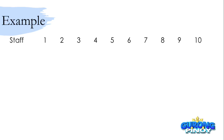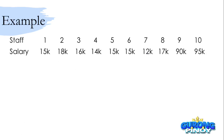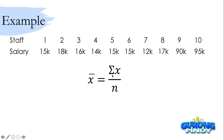Say you have 10 staff members, and these are the salaries of your 10 staff members. One staff member receives 15,000, the other one receives 18,000, and so on. Now, if you will be solving for the mean, you use the formula summation of x divided by n. For summation of x, what you need to do is to add all the salaries: 15,000 plus 18,000 plus 16,000, and so on. Once you get the sum, you just divide it by n. The n here is the total number of values, so in this case that's 10. Divide the sum of the salaries by 10.